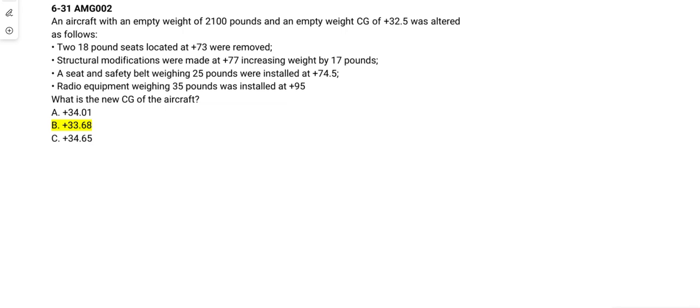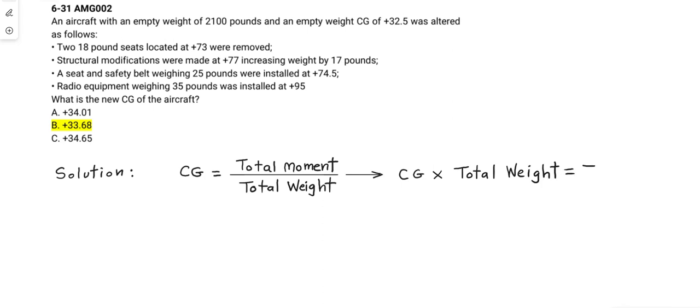We have this question so we can get started and predicate the solution on the formula. Total moment divided into total weight will compute the center of gravity, so therefore the center of gravity times the total weight will compute the original total moment.